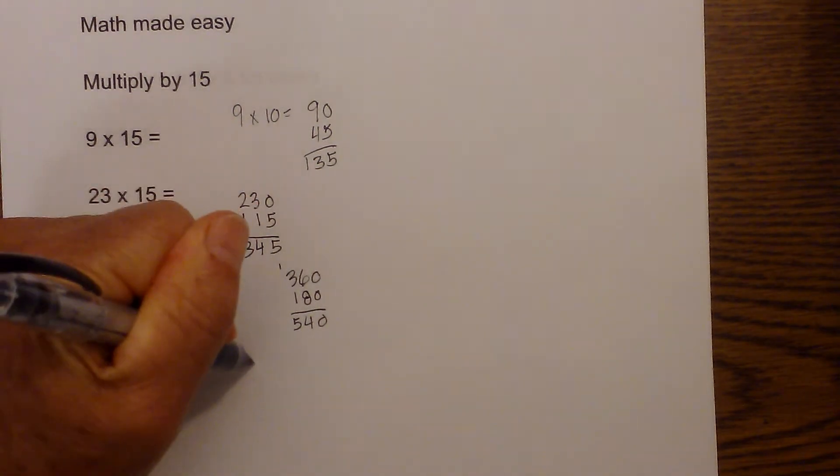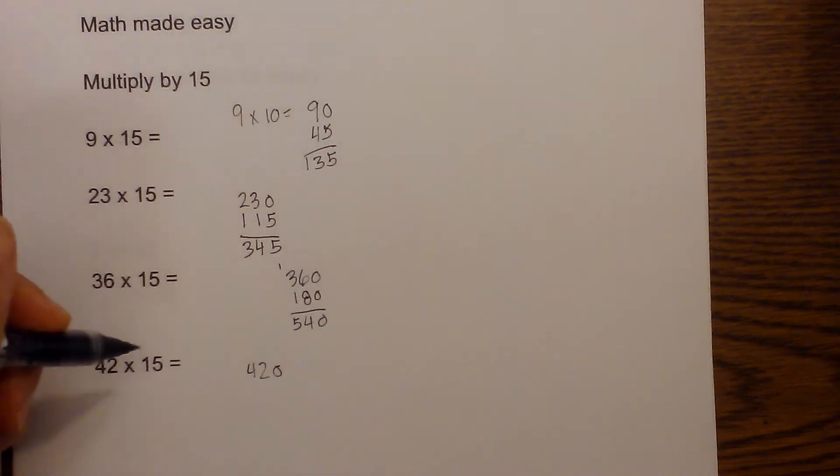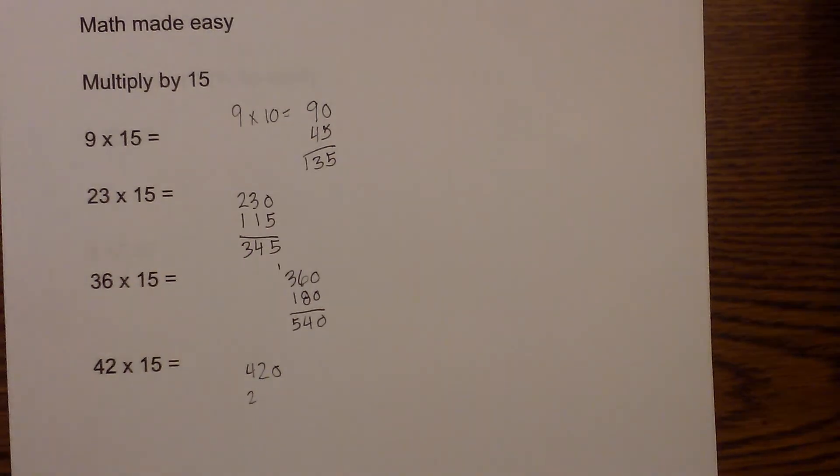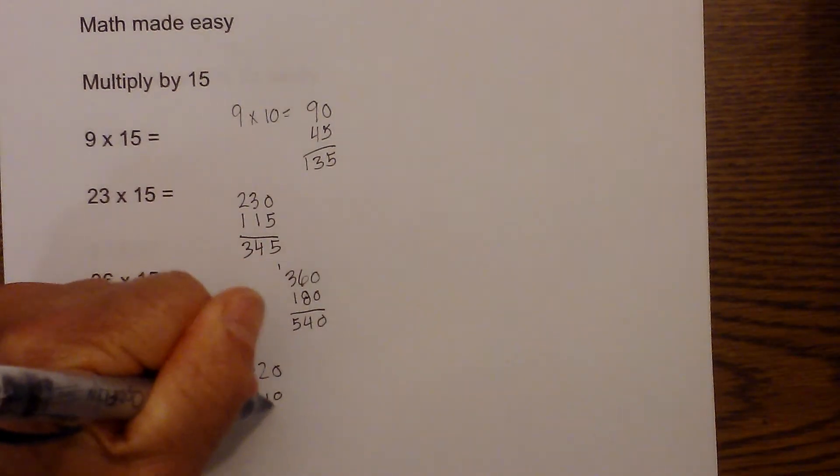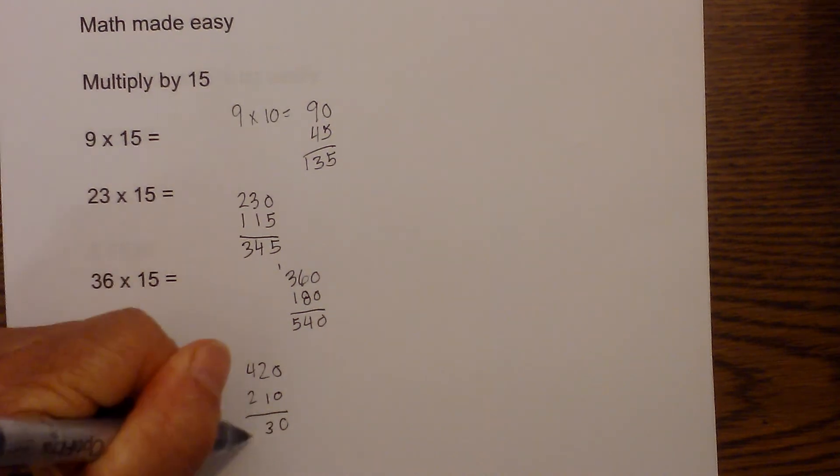42 times 15: multiply by 10, which is 420. Half of 420 is 210. Add this together, and that becomes 630.